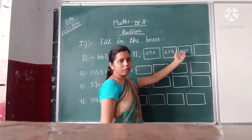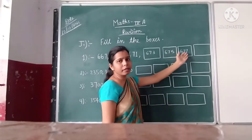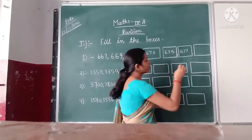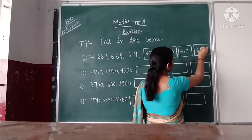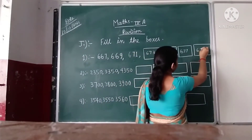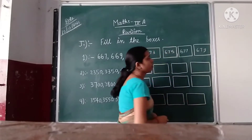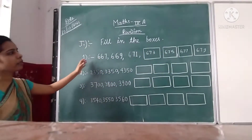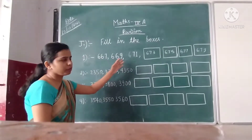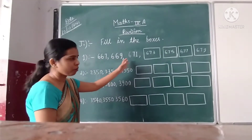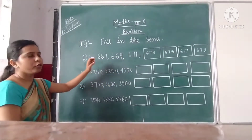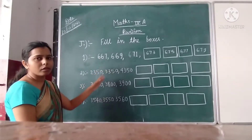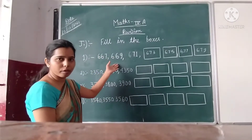When we add 2 in 677, we get our next number 679. So what we observe in this series? This series is increasing order of numbers, where when we add 2 in our previous number, we get our next number.